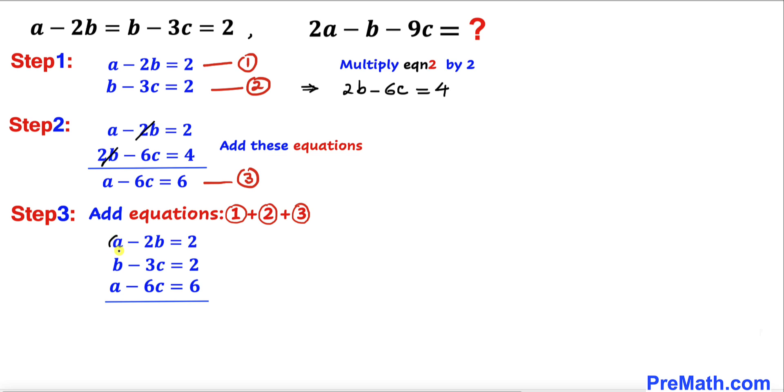Now let's go ahead and add them. We can see a plus a is going to give us 2a, and minus 2b plus b is going to give us minus b. Minus 3c and minus 6c is going to give us minus 9c. If we add the right-hand side, that is going to give us positive 10.